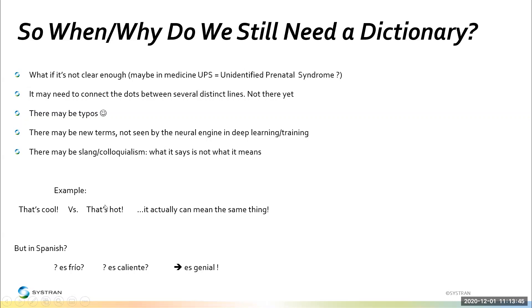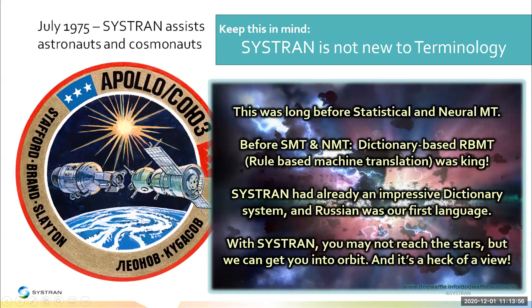There are all sorts of scenarios where we need to give the engine a boost because it hasn't learned or been trained on a term yet. On top of that, there are colloquialisms — so many cases where you say something and mean something different. 'That's cool' or 'that's hot' means something different in Spanish: you say 'genial,' meaning genius. Back in 1975, Systran was selected to help cosmonauts and astronauts on Apollo-Soyuz — that was our first language pair, Russian to English. We already had a really good dictionary system, helping them communicate since they only had a few months to learn each other's language.